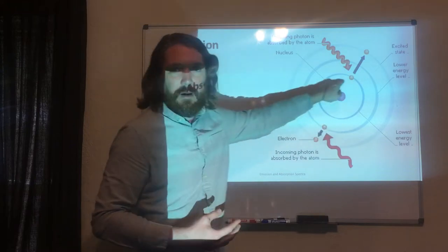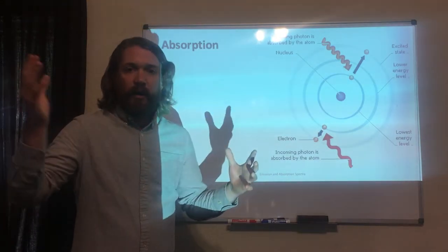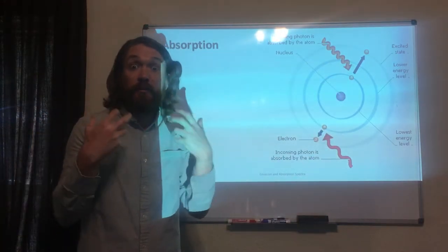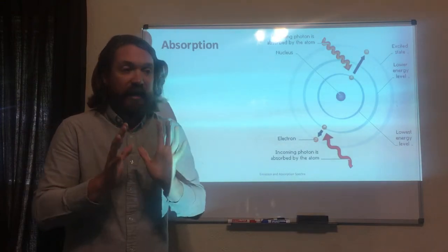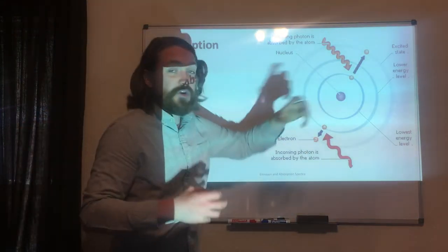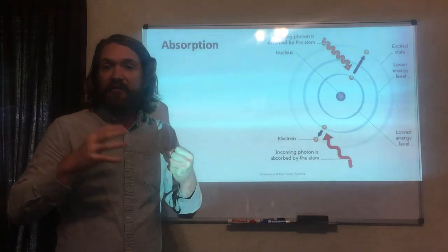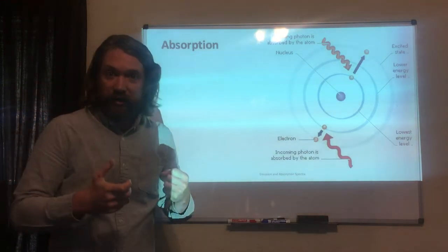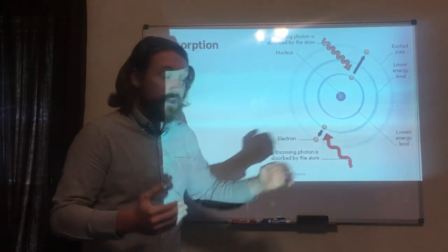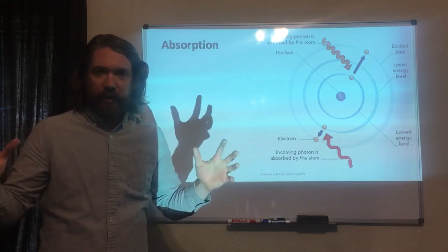Here we have the nucleus of an atom and our electron starts off at the ground state, just hanging out minding its own business. Then a beam of light comes and shines on the atom. The electron is able to absorb some of that light. Remember, light has no mass but it's full of energy — it's little packets of energy. The electron absorbs some of that energy, like drinking a Mountain Dew or a five-shot espresso. It gains energy and jumps up to a more excited state, getting farther away from the nucleus.